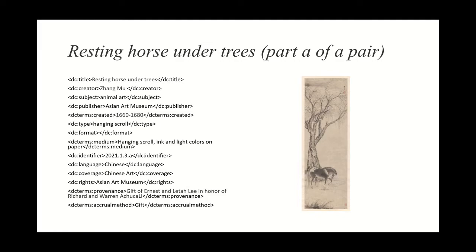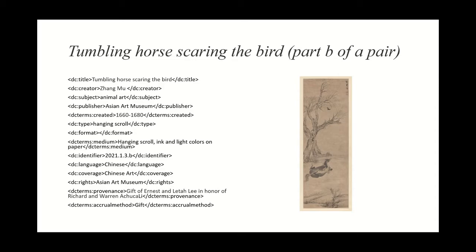'Resting Horse Under Trees, Part A of a pair.' Something of note when cataloging and two things belong to a collection: we can call one A and B. So if you see under DC identifier, I have 2021-13-A and the next one will be 2021-13-B. And here is that identifier — this is the second part, Part B of a pair of paintings.